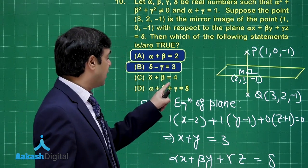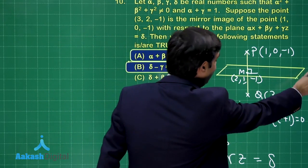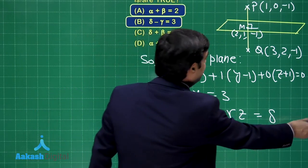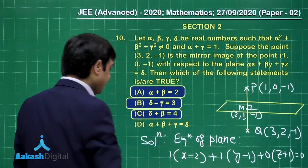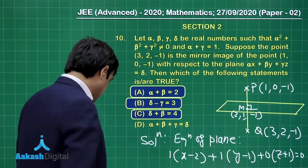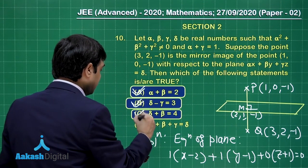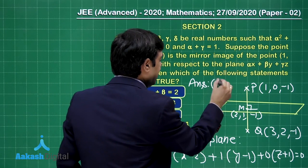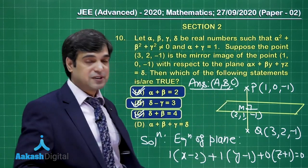Next, δ + β = 3 + 1 = 4 — also correct. Then α + β + γ = 2, while δ = 3, so this option is not correct. The correct options for question 10 are A, B, and C.